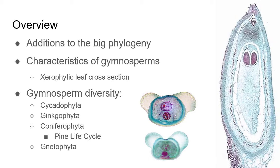Under those characteristics of gymnosperms, we'll look at xerophytic leaves. We'll draw a cross section of a pine needle and review those characteristics that we learned in the leaf lab that allow these leaves to be highly adapted to dry conditions — remember, xero means dry. Then we'll look at gymnosperm diversity. We have four major groups of gymnosperms. The gnetophytes aren't really in their own phylum Gnetophyta anymore — they belong within the conifers most likely.